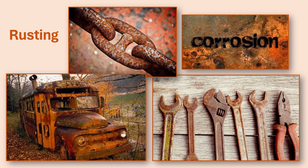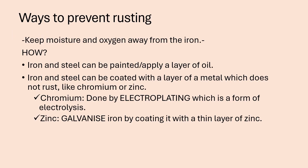It's important that we find ways to prevent rusting. The most important thing is to keep moisture and oxygen away from the iron. We can apply a layer of paint or oil on the iron to keep the moisture and oxygen away. Another way is to cover the iron with a layer of metal that does not rust as easily, like chromium or zinc. We can cover iron with a layer of chromium through electroplating. And very often iron plates are covered with a layer of zinc through the process of galvanizing — we galvanize the iron plates by coating them with a thin layer of zinc, and then these plates do not rust as easily.